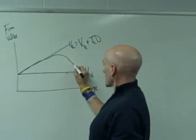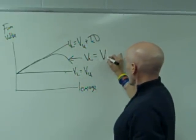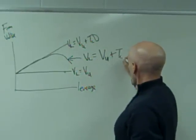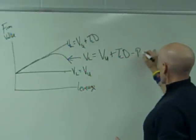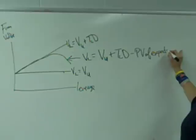Now what we actually see is something that more looks like this where the value of a levered firm equals the value of an unlevered firm plus a corporate tax shield minus the present value of expected financial distress costs.